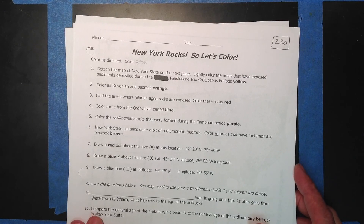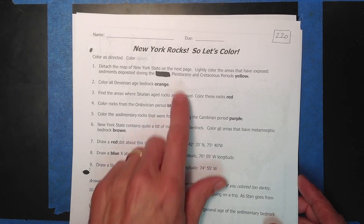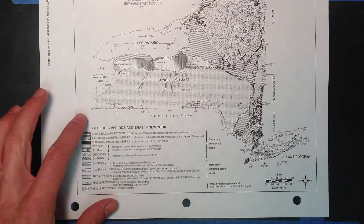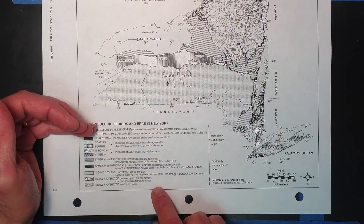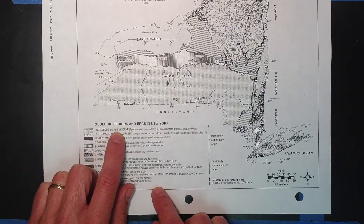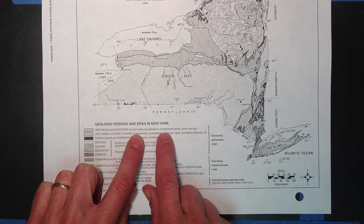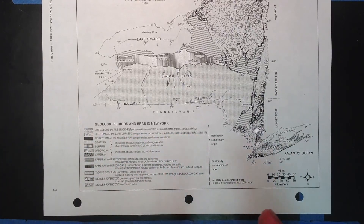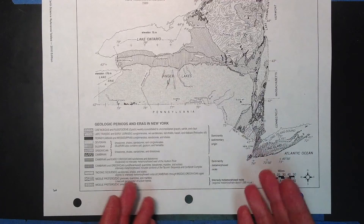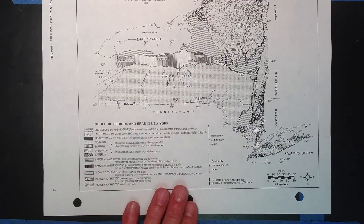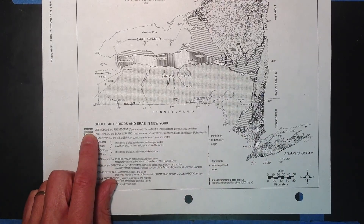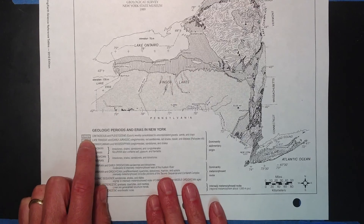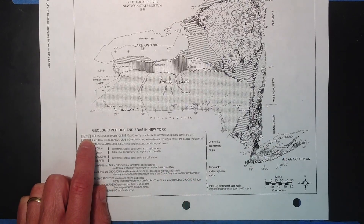Lightly color the areas that have exposed sediments deposited during the Pleistocene and Cretaceous periods yellow. So what you want to look at here is these are the geologic periods. We go from most recent to oldest, and it says Cretaceous and Pleistocene — weakly consolidated to unconsolidated gravel, sands, and clay. That's the sort of age of what you find there, and this is not bedrock, this is just sediments. So you're going to find that symbol right there and you're coloring it in yellow.